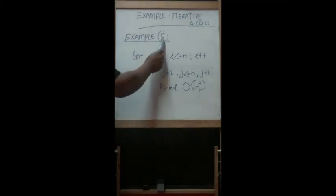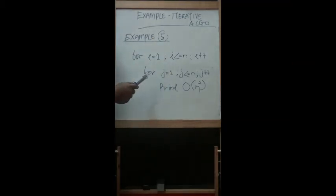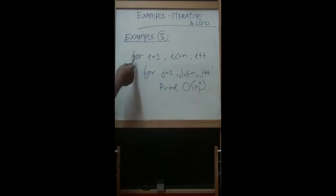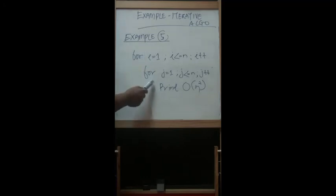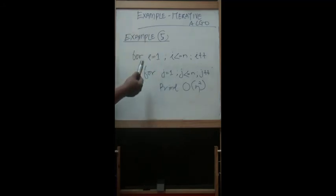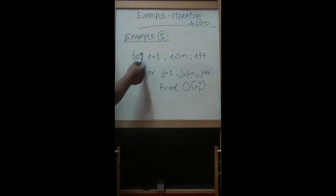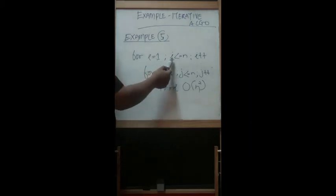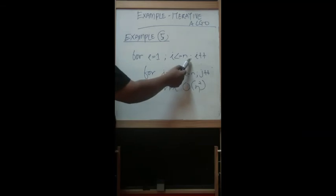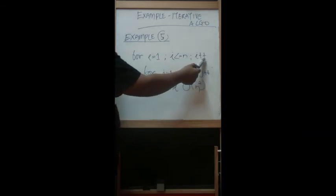This is example number five of the iterative algorithm analysis. Here we can see that we also have two loops — an outer loop and an inner loop — as we had in the previous example number four. But the difference here is that for the outer loop: i equal to one, i less than or equal to n, i plus plus, increasing by one.